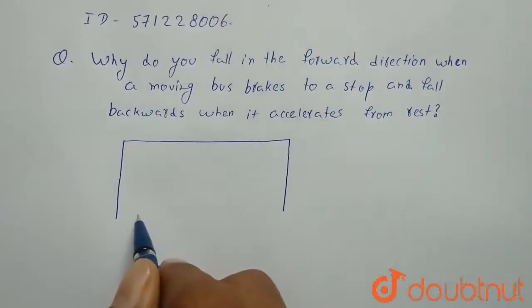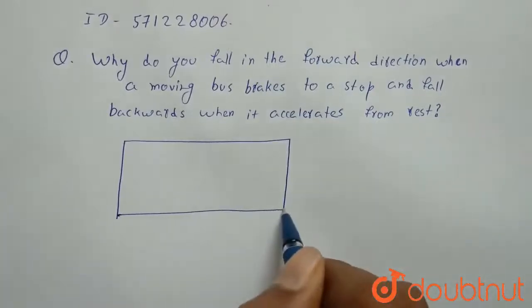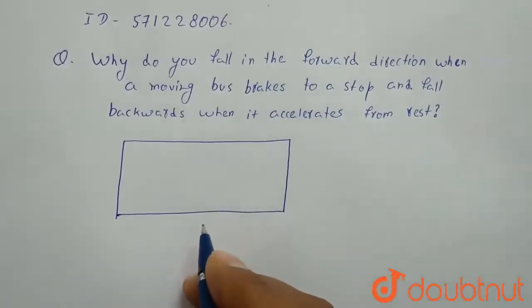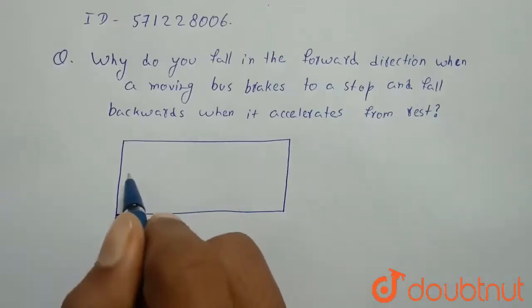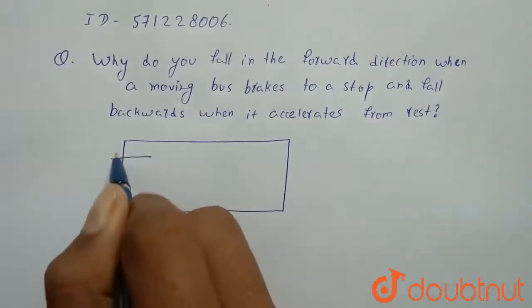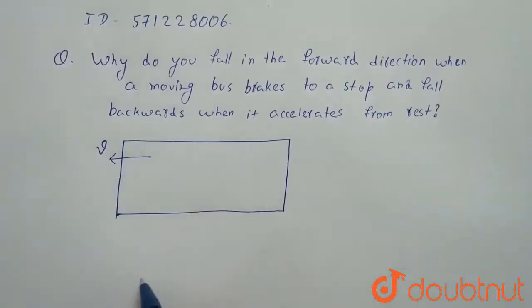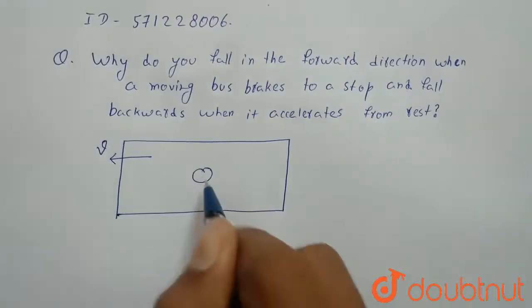Why do we fall in forward direction when the moving bus brakes? So suppose this is our bus. Initially it was moving with a velocity v and you were sitting inside the bus.